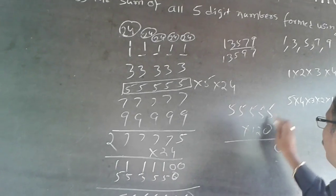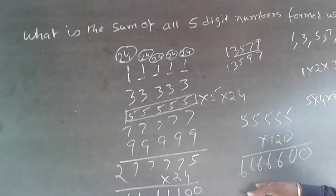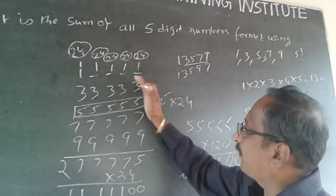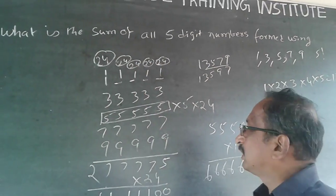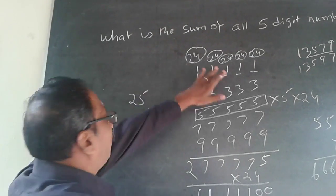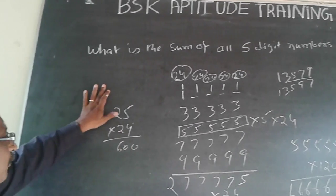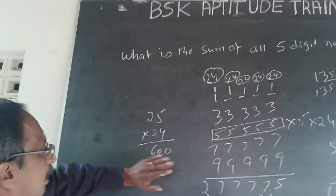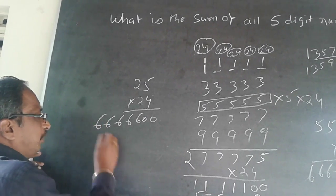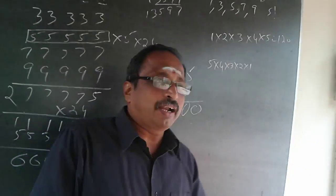Even simpler: just total the digits 1+3+5+7+9 = 25. Since each digit appears in every place 24 times, the contribution per place is 25 × 24 = 600. Multiply 600 by the place values — units, tens, hundreds, thousands, ten-thousands — to get the final sum. Understanding the question and approach is key; then you can do it much faster.